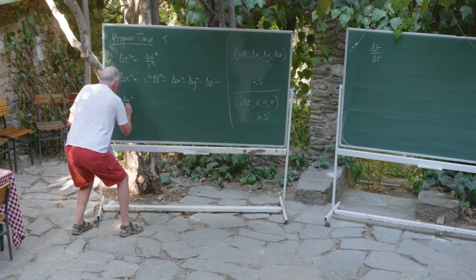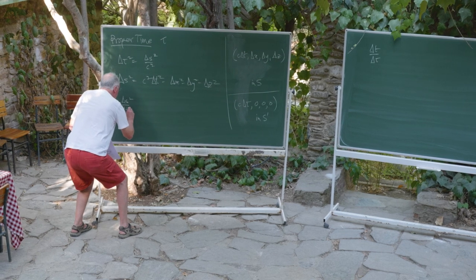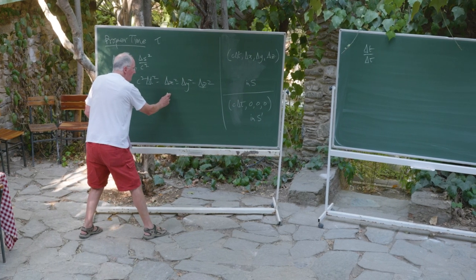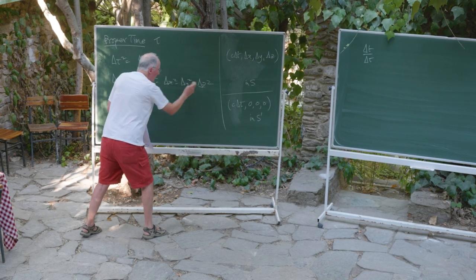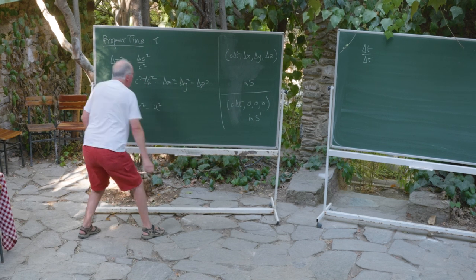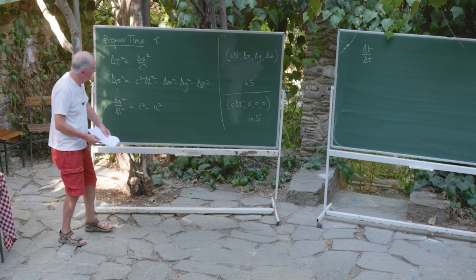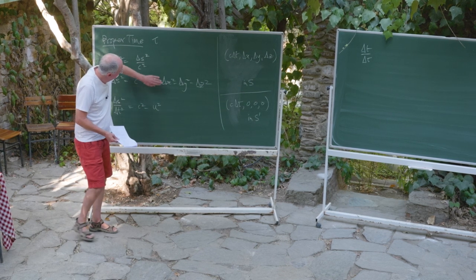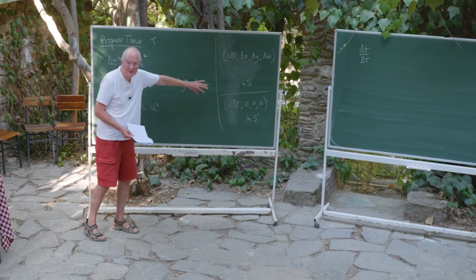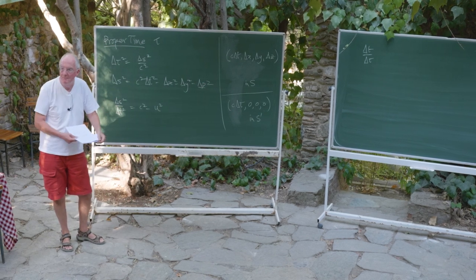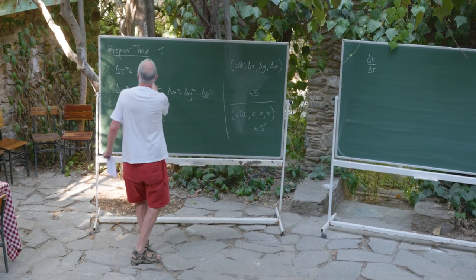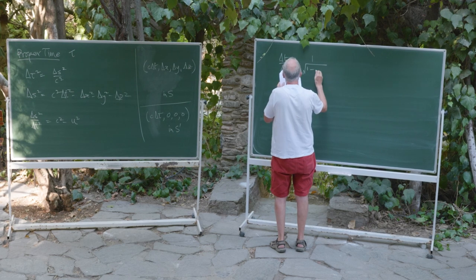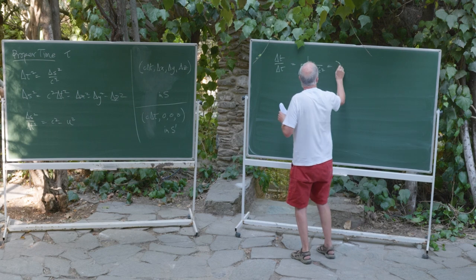So delta s squared over delta t squared equals c squared minus delta x squared over delta t squared, delta y squared over delta t squared, and delta z squared over delta t squared — and that I'm going to call u squared. In other words, it's the ordinary Euclidean square of the magnitude of the velocity vector. And if you look at that, you can see that delta t over delta tau is one over the square root of one minus u squared over c squared — in other words, it's gamma of u.